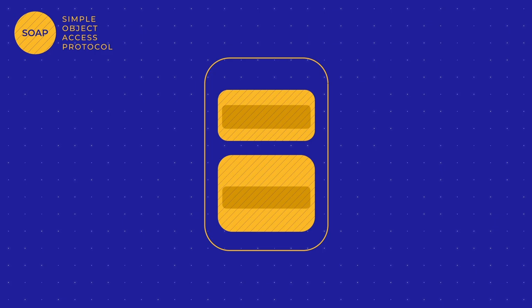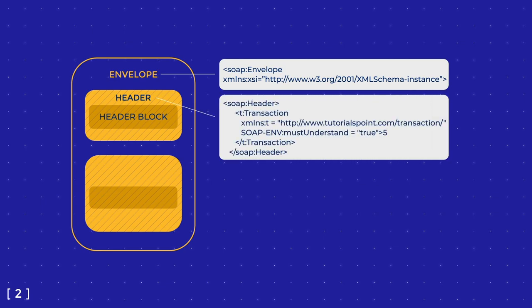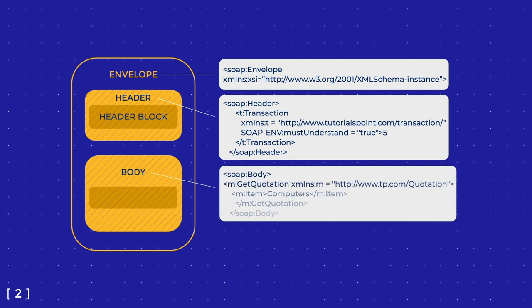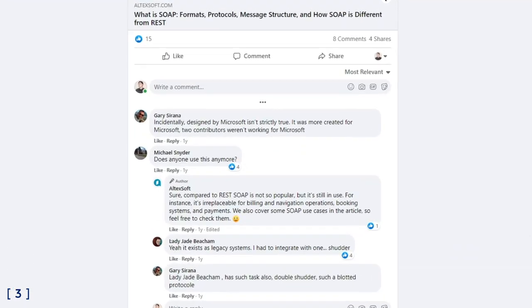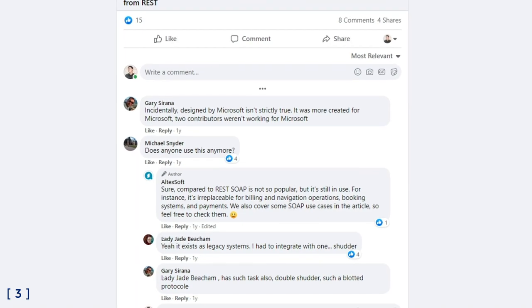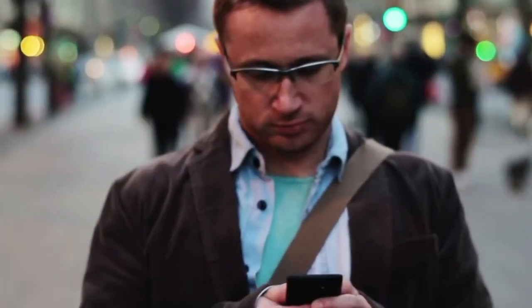A SOAP message is framed with an envelope tag — the root element of every SOAP message, starting and ending it. Then follows the header, its optional sub-element, filled with any application-related specifics or extra requirements necessary for message processing. The body contains the request or response to the recipient. If request processing fails, the response will also include a fault element describing the error that occurred.